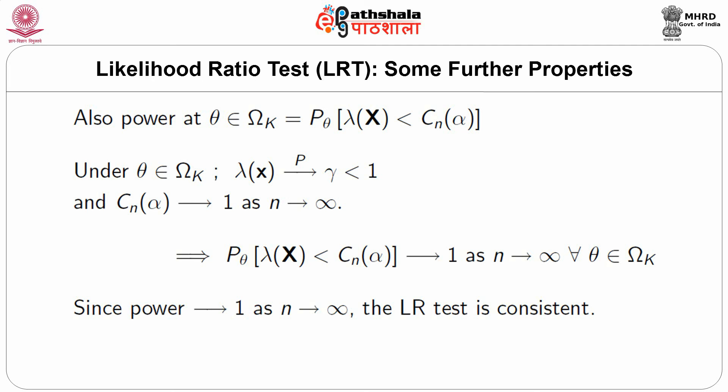In this module, we have discussed that though an LRT is widely applicable and is based on maximum likelihood estimation, it may sometimes perform worse than even a very trivial test. Still, the attraction of the LRT is its very systematic asymptotic distribution of the test statistic, which is always chi-square. Moreover, a likelihood ratio test is consistent.